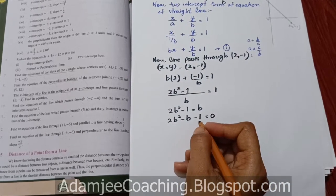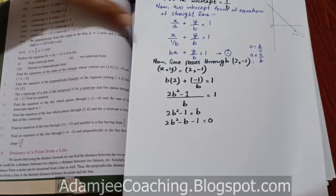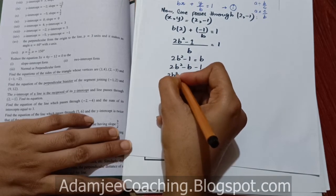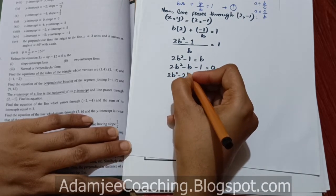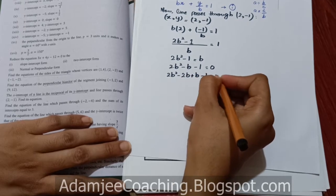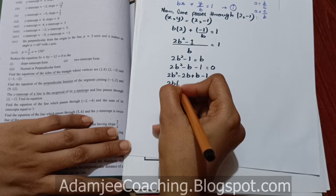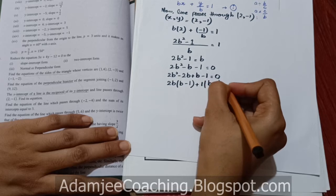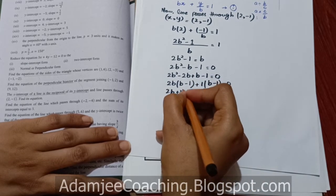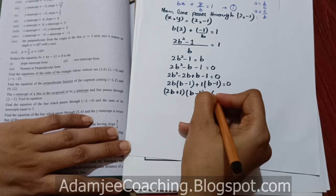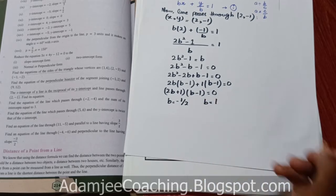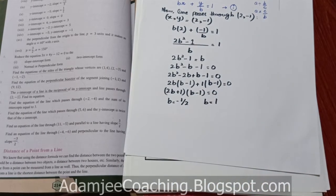اب middle term break کریں: 2b² minus 2b plus b minus 1 equals to 0۔ دونوں میں 2b common ہے تو 2b(b minus 1) plus 1(b minus 1) equals to 0، تو (2b plus 1)(b minus 1) equals to 0۔ اس سے b کی value آئے گی minus 1/2 یا b equals to 1۔ اب 1 by 1 put کریں گے۔